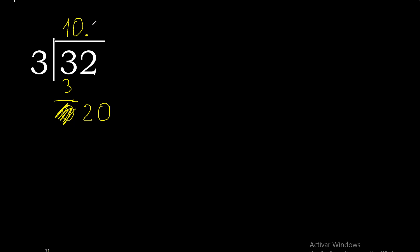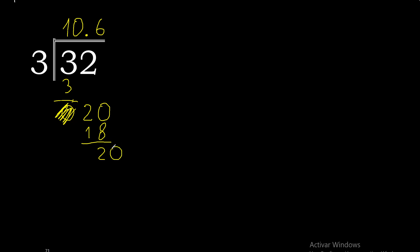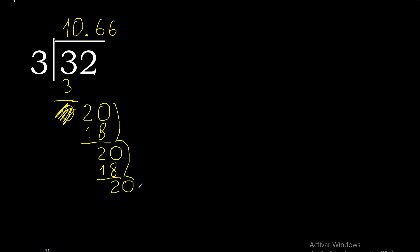3 multiplied by 7 is 21 — excessive. 3 multiplied by 6 is 18. 20 minus 18 is 2. Always complete with 0 point, only once. 3 multiplied by 6 is 18, subtract. This repeats — therefore this number repeats.